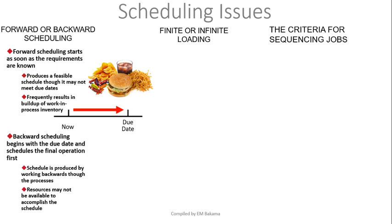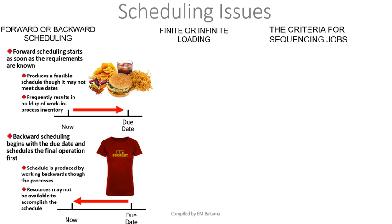The second one is backward scheduling — the opposite of forward. We begin with the due date and schedule the final operation first. On a timeline, we start from the due date and go back to now. An example would be a t-shirt printing company. You tell them you need 5,000 t-shirts, and they ask when you need them. You say 14 days. Then they work backwards — to order material, which takes a certain time — and say they will start your order next week. So backward scheduling starts with when the product needs to be done, then works all the way back.